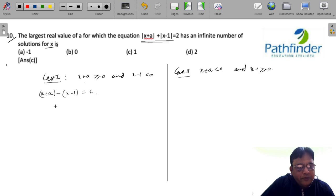So x gets cancelled out and you have a+1 = 2. And the value of a for which there will be infinite solutions, one value is 1. a = 1.